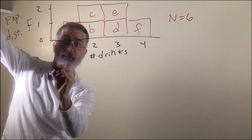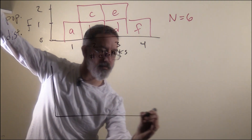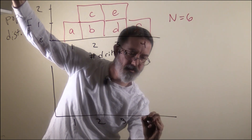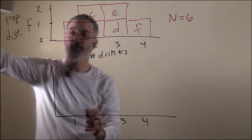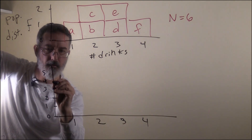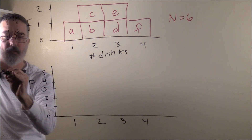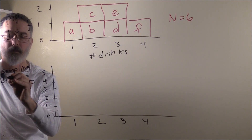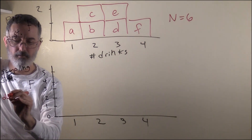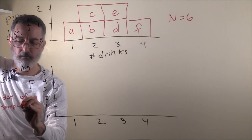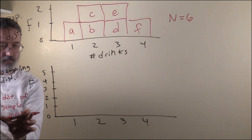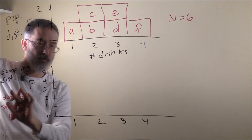Down here, I am going to draw the distribution of sample means. I want to line this up because we are still talking about the number of drinks. If we keep the scale the same, you get a better sense of how the population and the sampling distribution relate to each other. This is a frequency distribution and it is a sampling distribution. There is more than one kind of sampling distribution, and we are going to start with the most simple kind, called a distribution of sample means. What we are going to do is calculate sample means using random sampling from this population and create a histogram — a frequency distribution of the sample means.